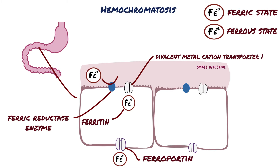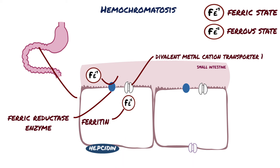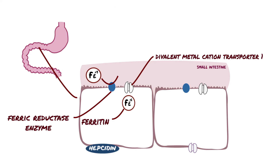The transmembrane protein ferroportin is the only efflux route of cellular iron and is regulated almost exclusively by hepcidin levels. Hepcidin binds ferroportin, resulting in its internalization and degradation, effectively shunting cellular iron into ferritin stores and preventing its absorption into the blood. Thereby, hepcidin also potentiates the excretion of iron through the sloughing of enterocytes and their ferritin stores into the faeces and out of the body. Therefore, hepcidin lowers plasma iron levels.